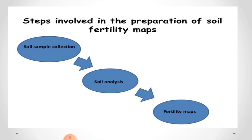Now let's see the steps involved in the preparation of a soil fertility map. There are three steps required: first is soil sample collection, second is soil analysis, and third is to create or prepare the fertility map.